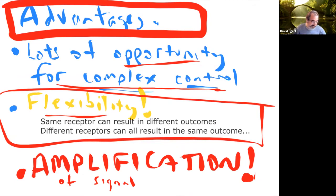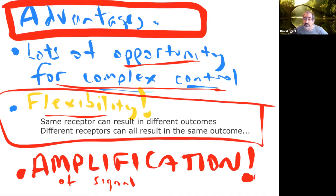One epinephrine molecule binding a receptor on a liver cell can mobilize release of 100 million molecules of glucose — a crazy amount of amplification. Each step activates even more of the next step. It's a way to have a small signal produce a big result. So even though second messenger signaling is complicated, it has significant advantages.